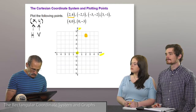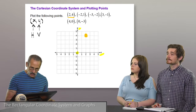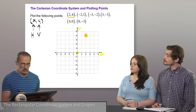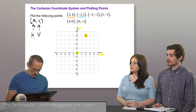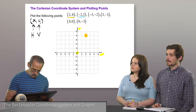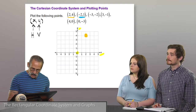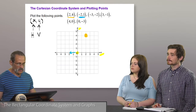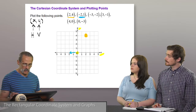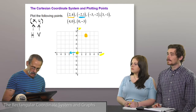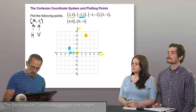To plot the second point, we look at the x-coordinate first. The x-coordinate is negative 2, so we go left 2 units. Then we check the vertical direction: that's up 1. And we plot the point.